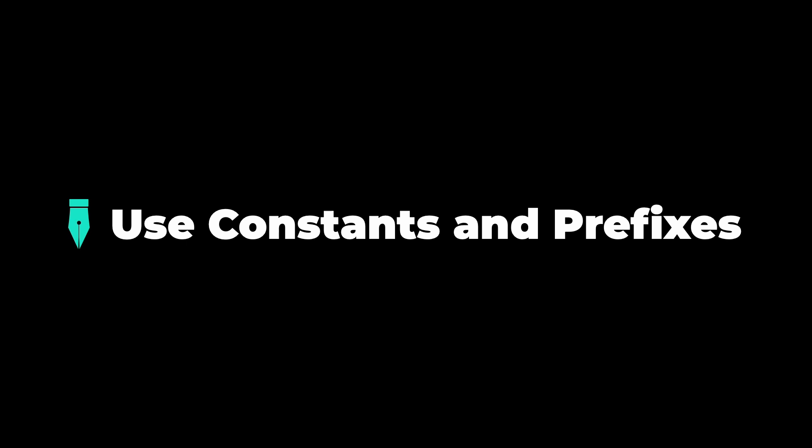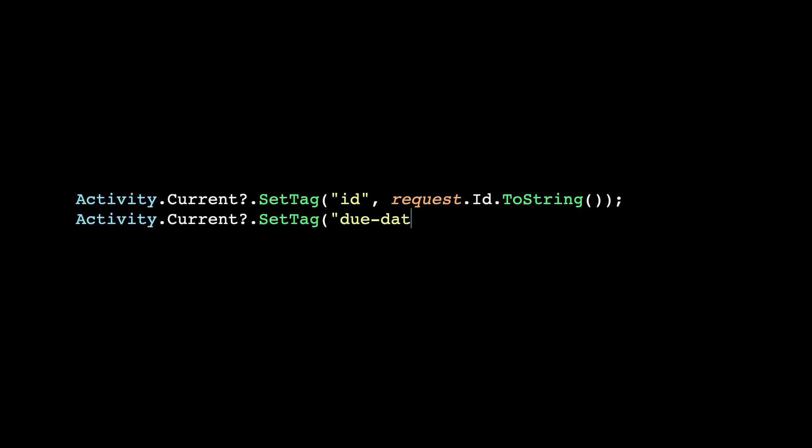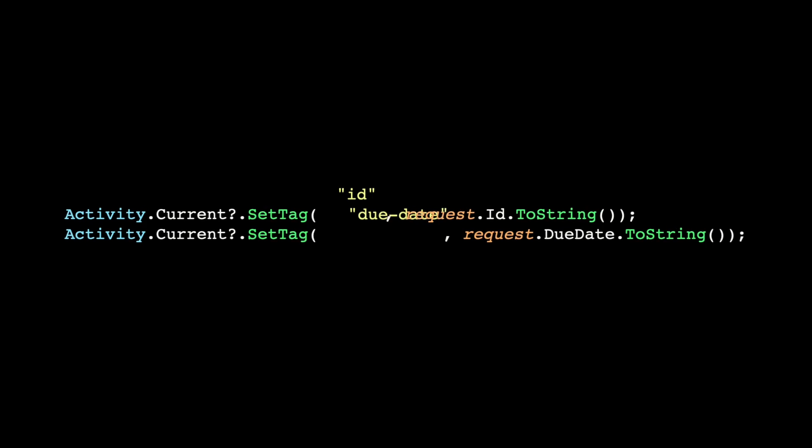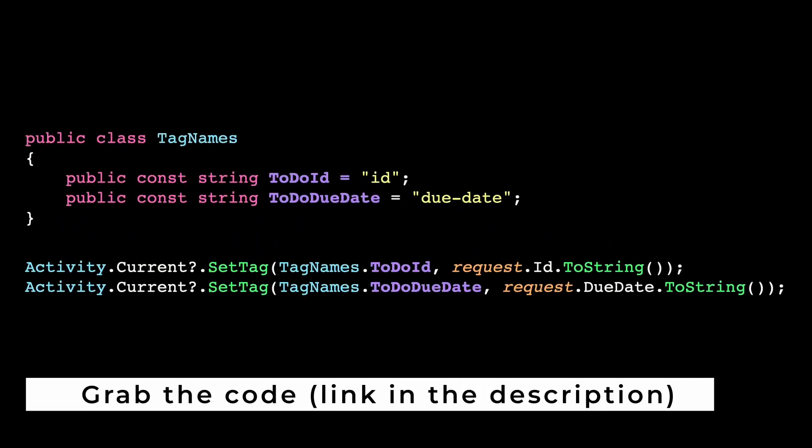Tip number three: use constants and prefixes. When you are manually instrumenting your code, which will be quite common, you'll need to set the names of tags, attributes, meters, or entries in the baggage — and for that you will need the key. If you keep writing those keys inline, you might get into a maintainability problem. So a good practice is to start right out of the gate by creating a list of constants that you can use for those cases.